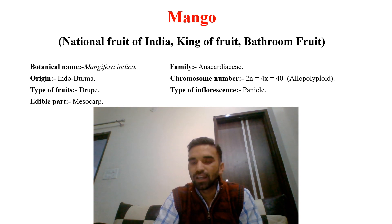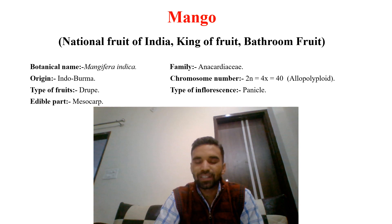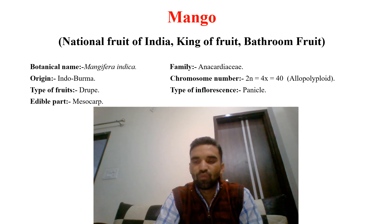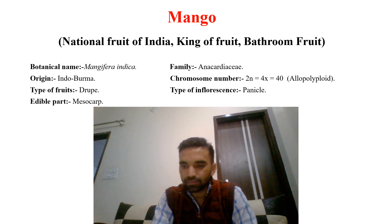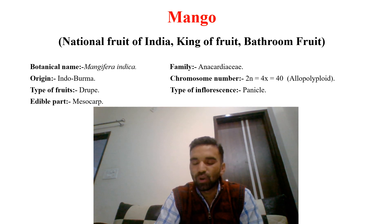In botanical classification, the botanical name is Mangifera indica, family Anacardiaceae — the same family as cashew. Origin is India-Burma (Indo-Burma). The chromosome number of mango is 4x = 40, meaning mango is tetraploid in nature. The haploid or basic chromosome number is 10. Mango is polyploid in nature.